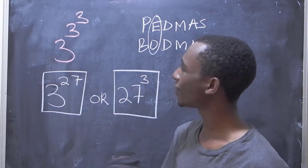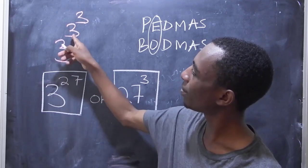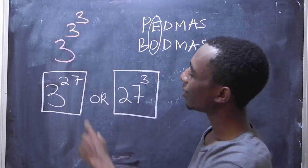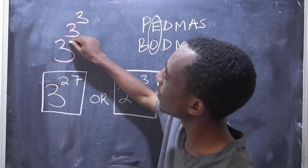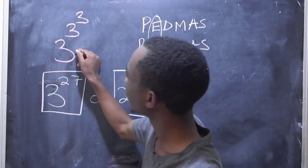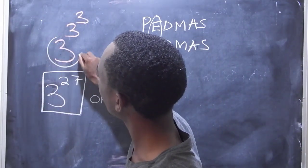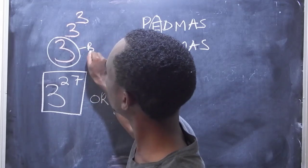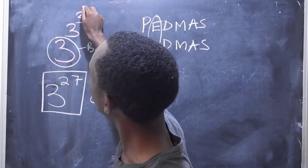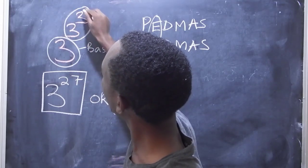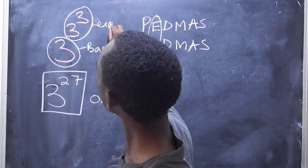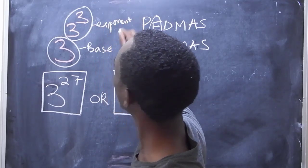Now the trick here is simple. If you look at 3 to the power 3 to the power 3, this 3 is the base, and all this is the exponent. So this 3 here, just circle this, this is called the base, and this here is the exponent.